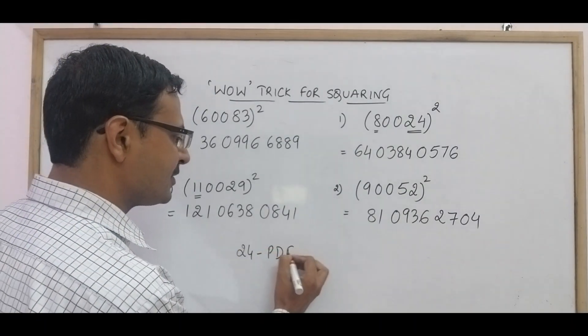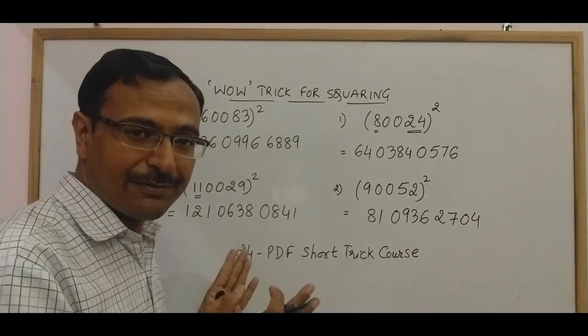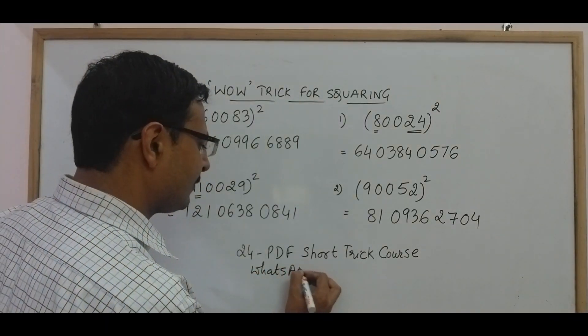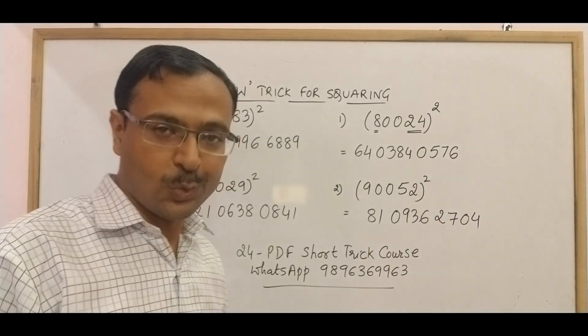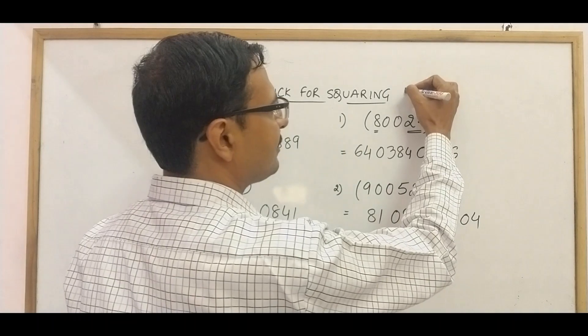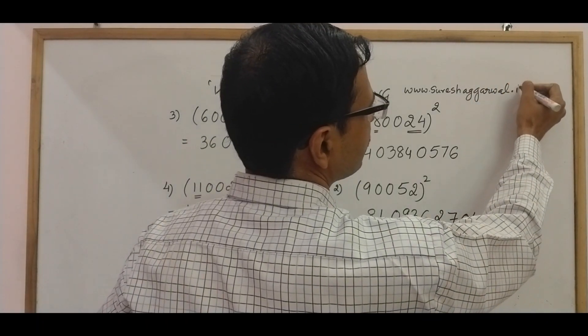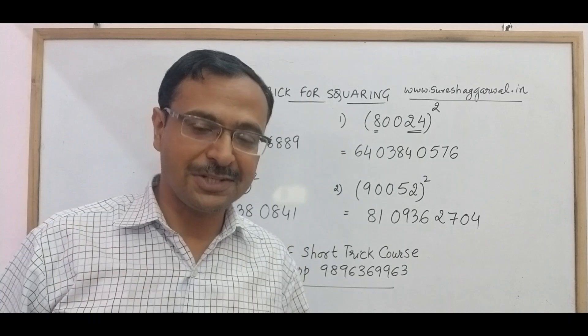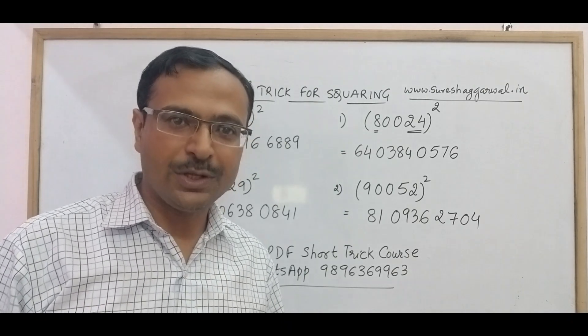So friends, go for the 28 PDF short trick course. I keep on telling my friends who are preparing for competitive exams to go for this PDF short trick course, 24 PDFs, everything through short tricks. You have to just send me a message on WhatsApp 9896369963 that's the number. Obviously a nominal cost associated with that course. Nominal means really nominal and for some reason if you are not using the WhatsApp, then you can visit this website www.sureshagarwal.in so that's the website on which you can find that PDF course. Friends, if you like this video of squaring 5 digit and 6 digit numbers, then do share it with all your friends who are aspiring to clear competitive exams and looking to build up that speed of calculations 10 times.